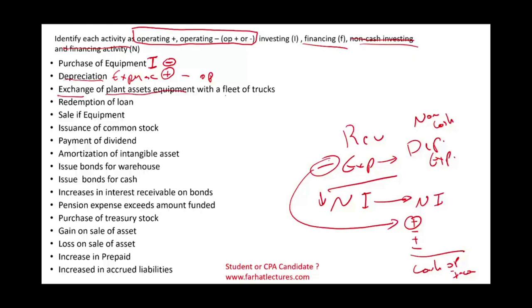Exchange of plant asset equipment with a fleet of trucks. We took plant asset equipment and traded them for a fleet of trucks. Plant assets are a form of investing; trucks are a form of investing. But since we exchanged them and did not pay cash for anything, it's non-cash investing and financing. We disclose this at the bottom of the statement of cash flows, and in the notes to the financial statements we may add more information about this exchange.